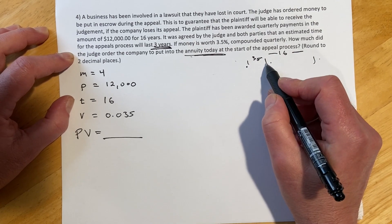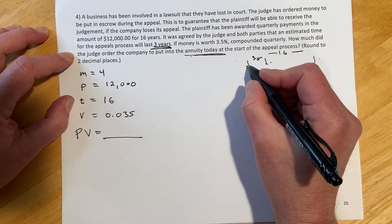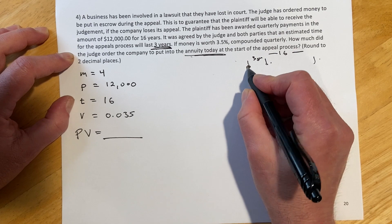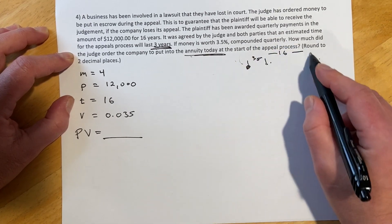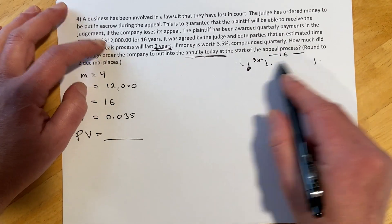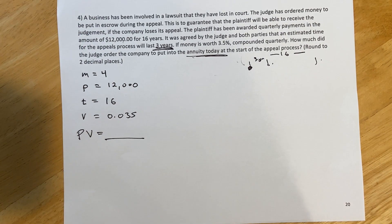If they win the case, then they get to keep the money. But so how much money do we have to put in here today to make it in three years, they can start taking out these $12,000 payments for 16 years. So that's what we're trying to work out.